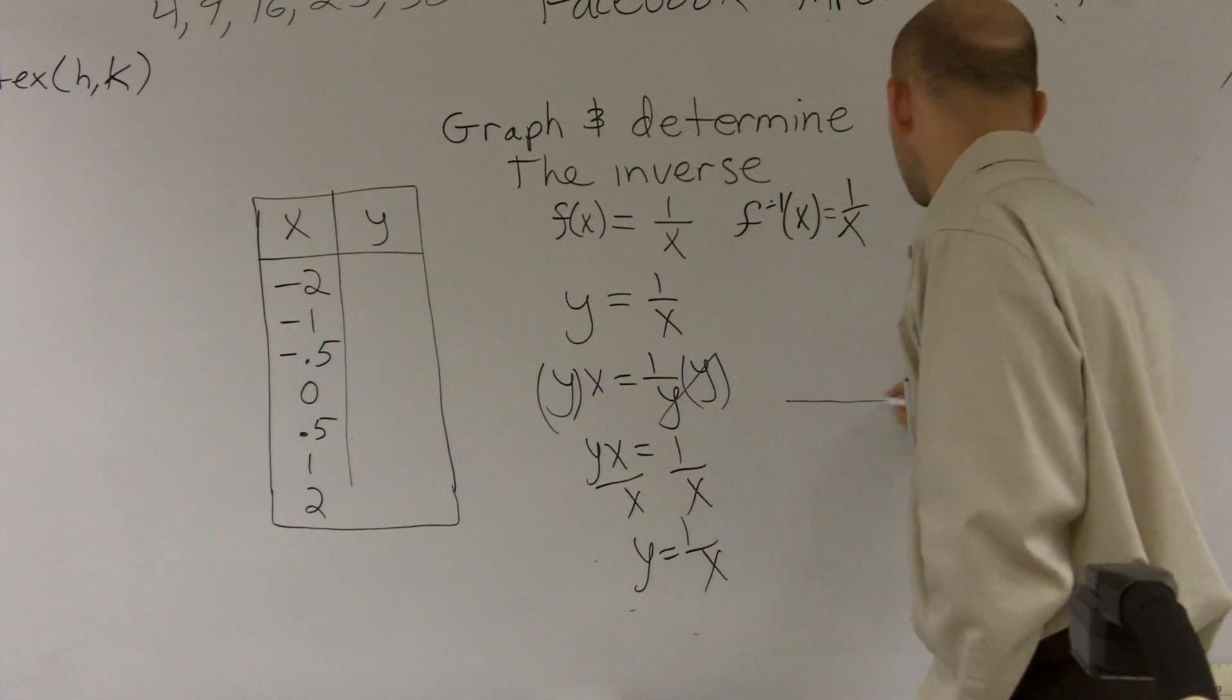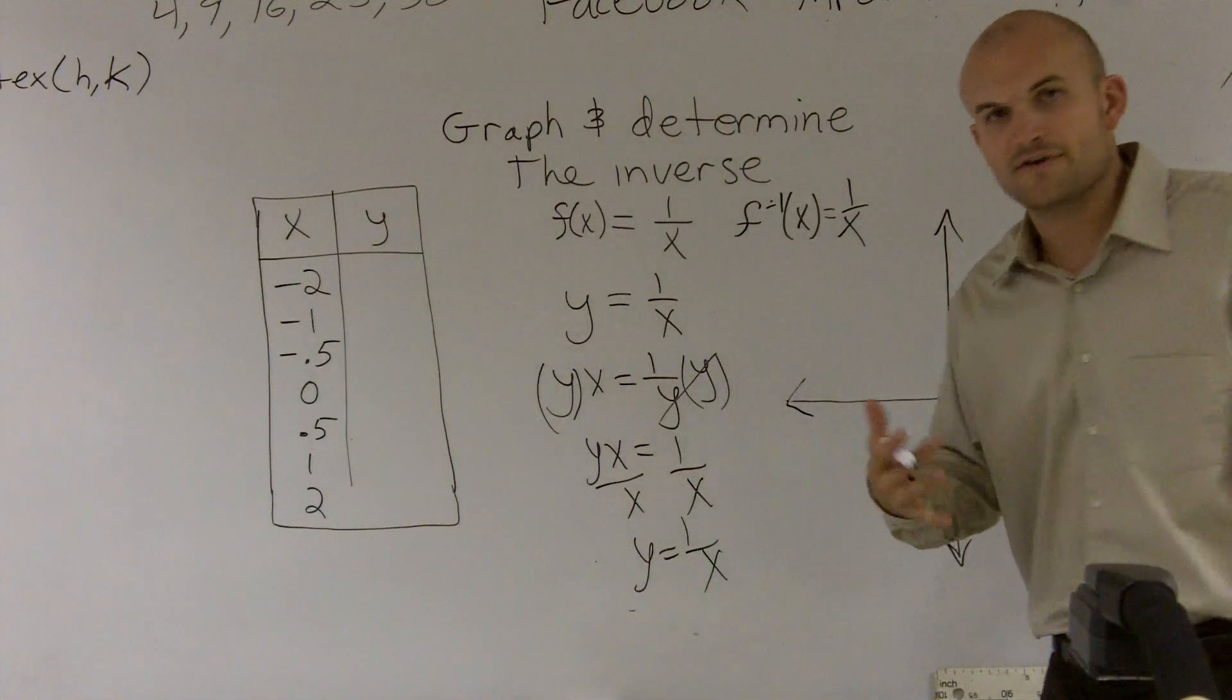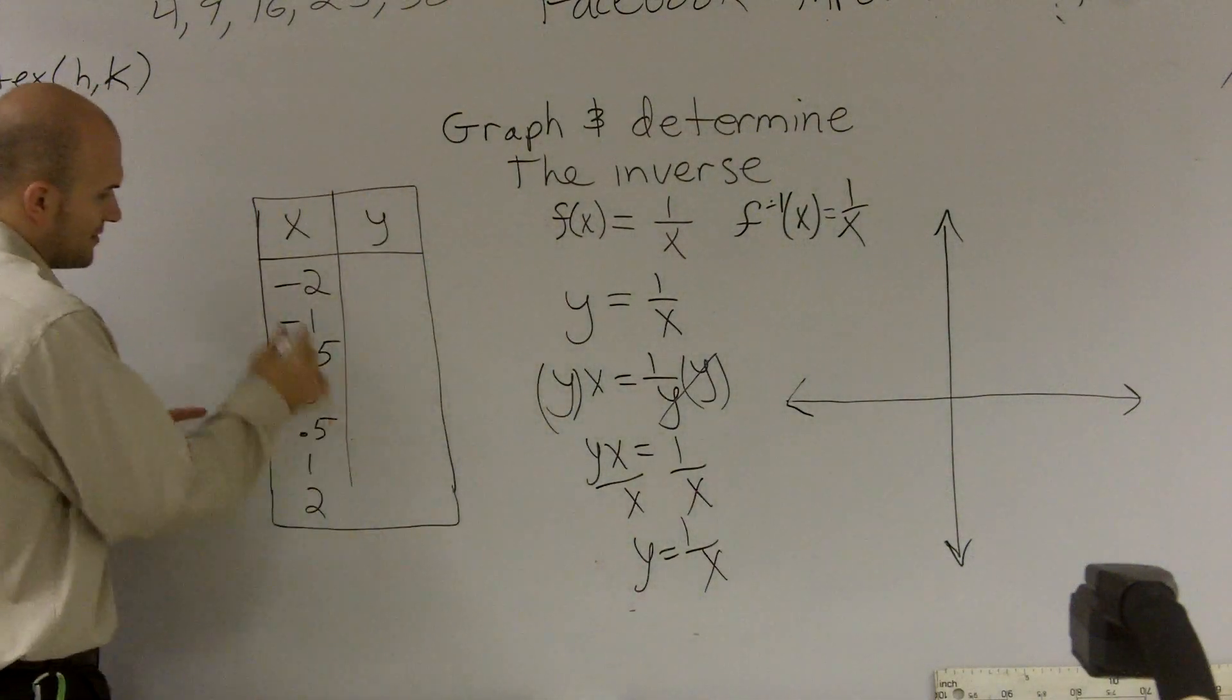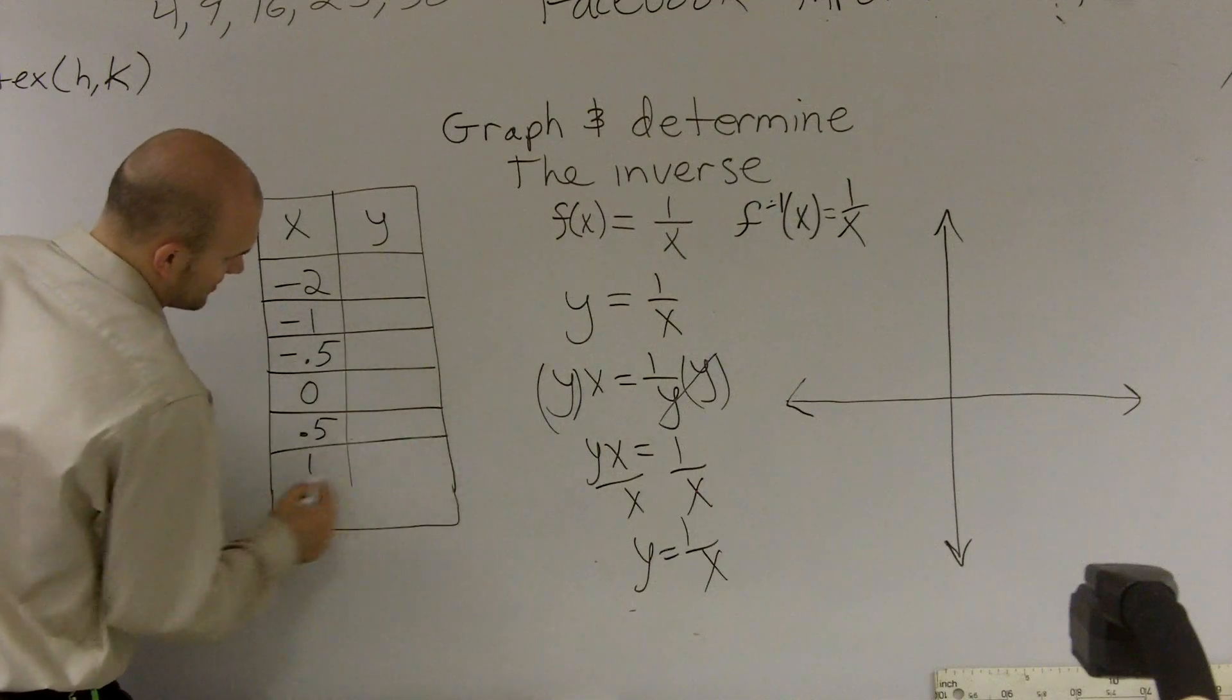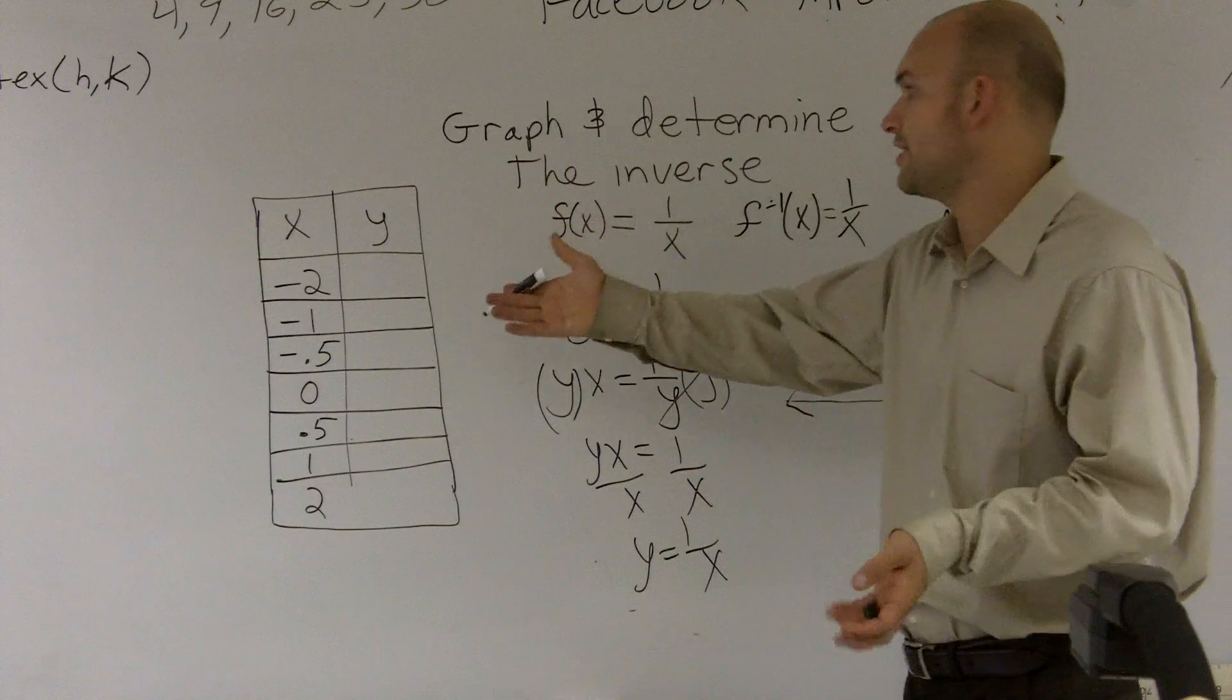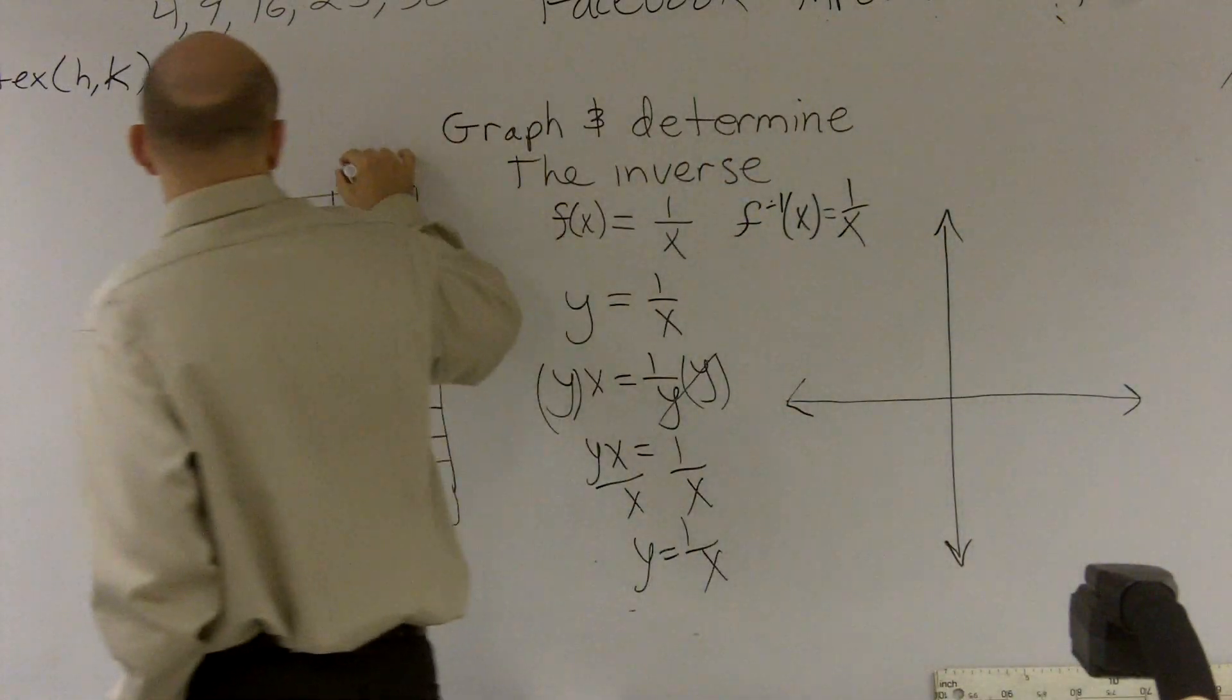Now, I know what these graphs are going to look like. But if you don't know what the graphs look like, a very easy way to do this would just be a table of values. And when creating a table of values, remember your x is your input and your y is your output. So you're just going to take a value and then plug it in.